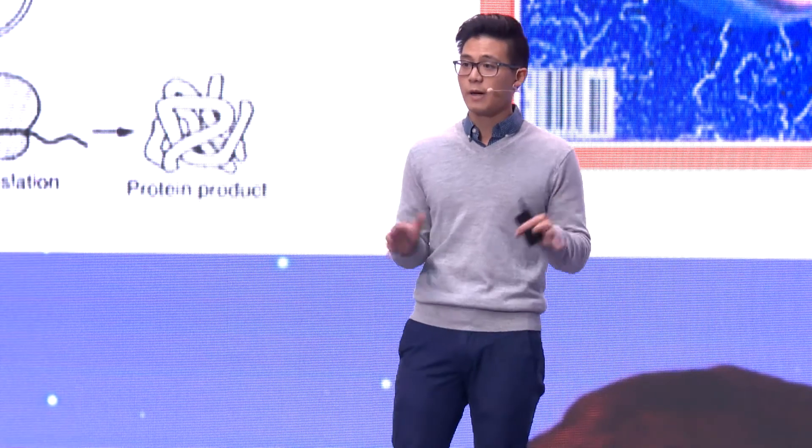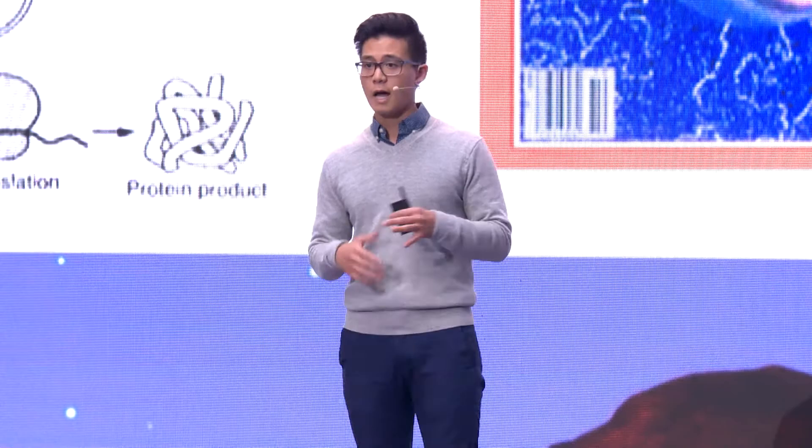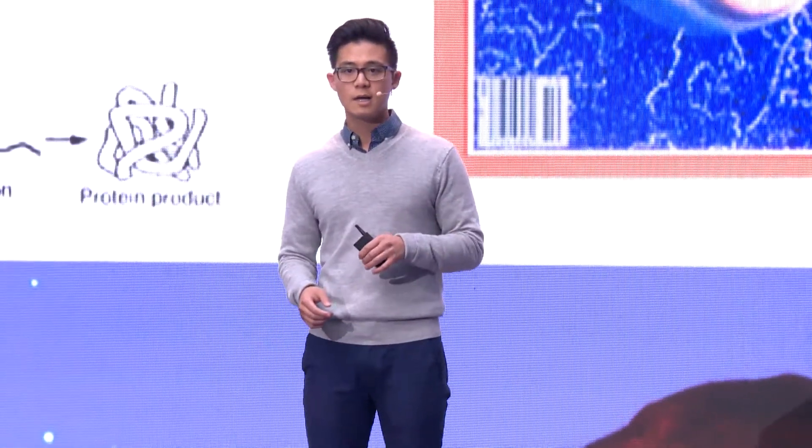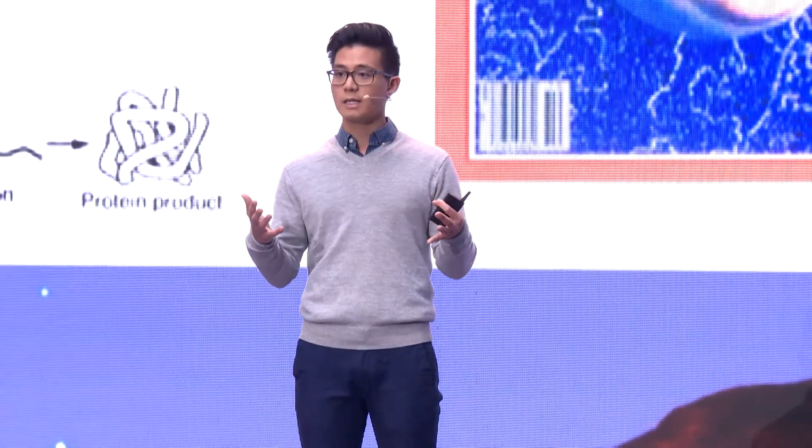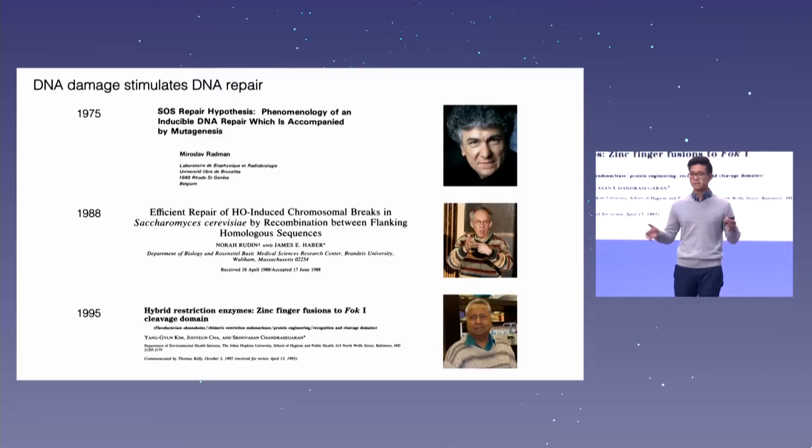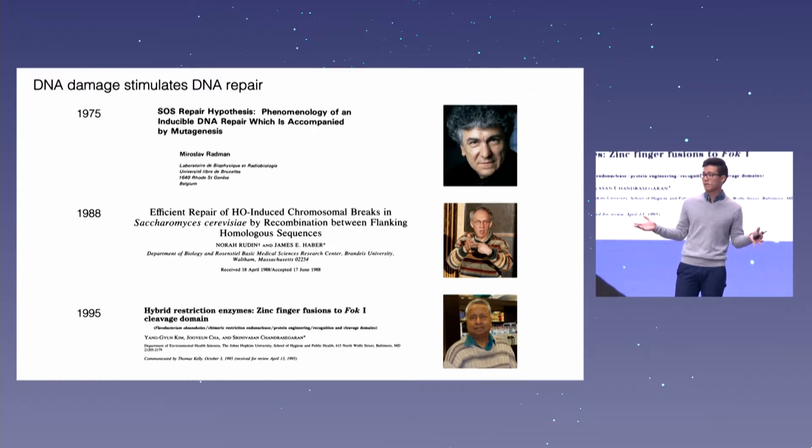But restriction enzymes typically recognize a specific six-base pair sequence. So how could we have tools like restriction enzymes that would be able to recognize any DNA sequence and do cut and paste of DNA inside of living cells? So around the same time, around 1975, there's this growing realization that DNA damage can stimulate DNA repair. This was first discovered partly on the basis of UV irradiation experiments, also known as something that happens when you're tanning on the beach, outside maybe in my lab in sunny San Diego.